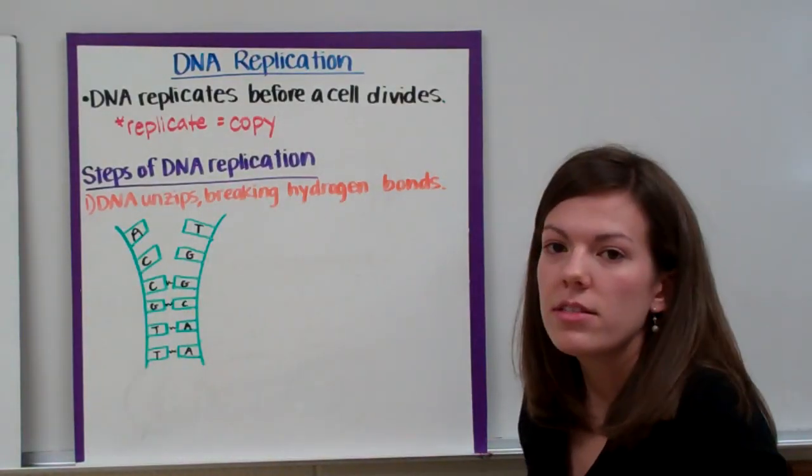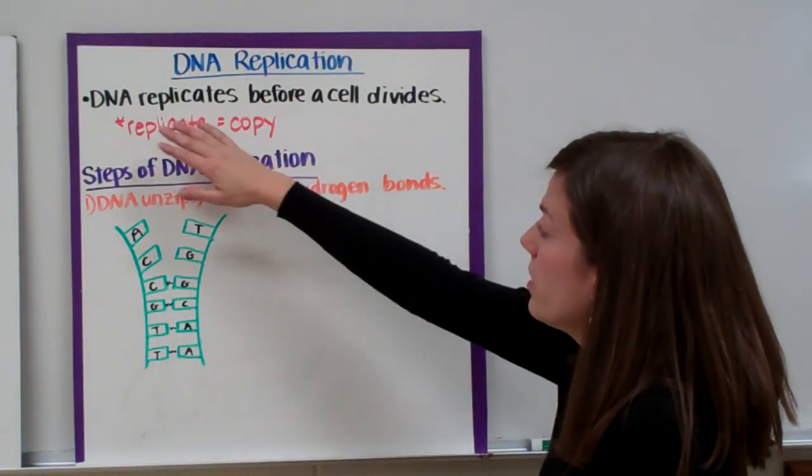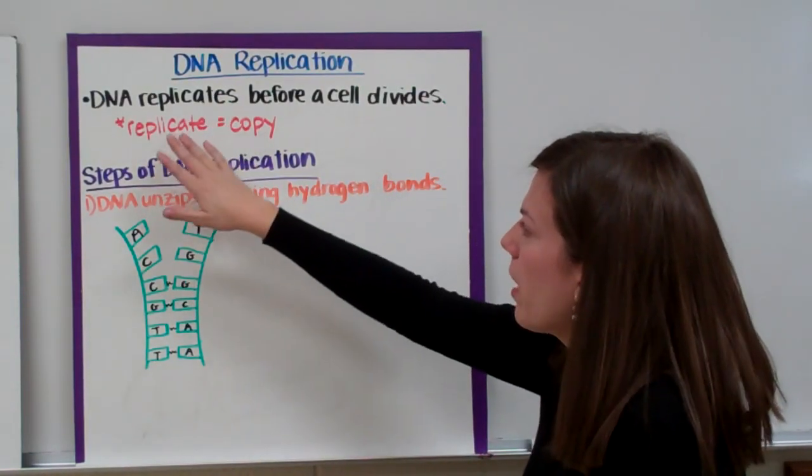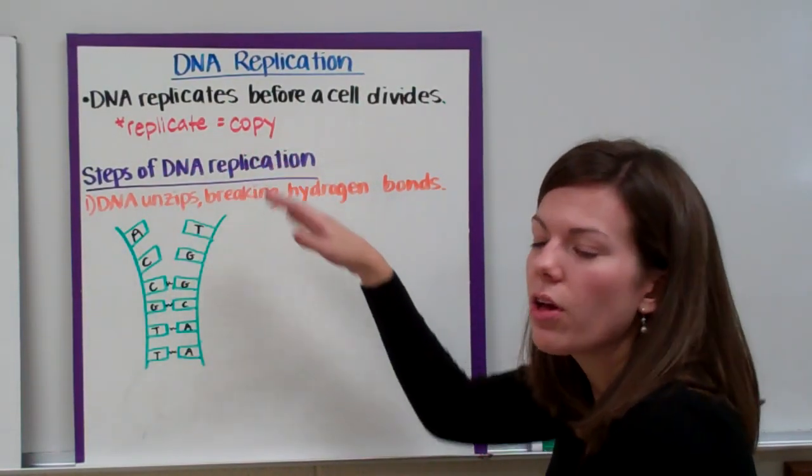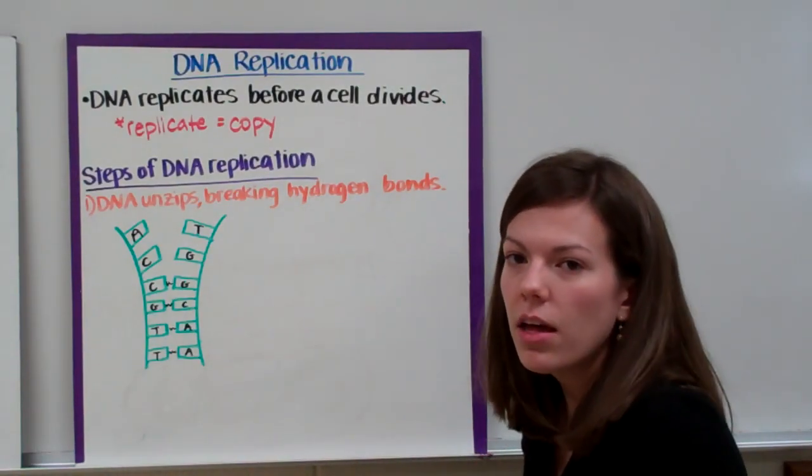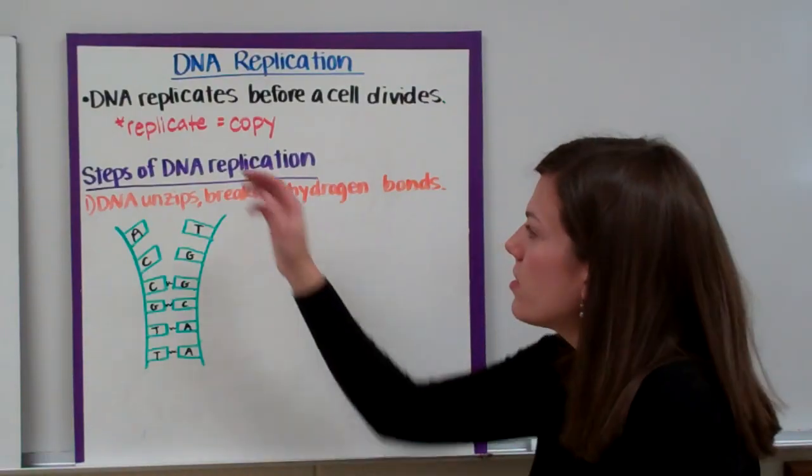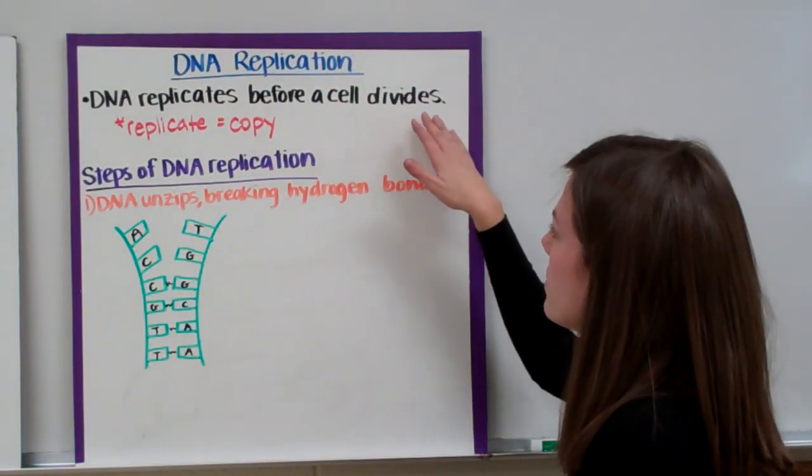Now let's discuss DNA replication. DNA replicates before a cell divides. If you don't know what replicate means, it's just another word for copy. So if we were to copy the Mona Lisa, that copy would be called a replica. Replication is the process of making a copy. We always copy our DNA before a cell divides.